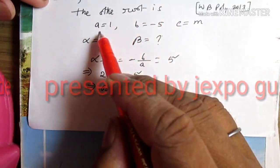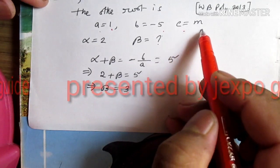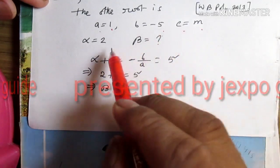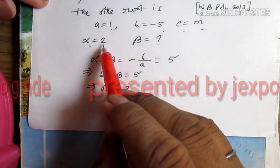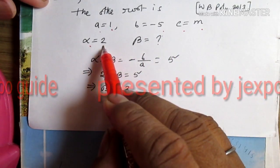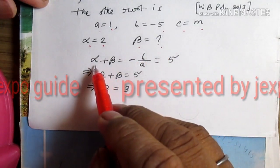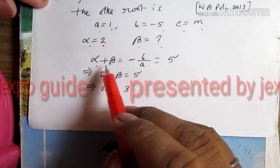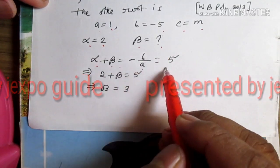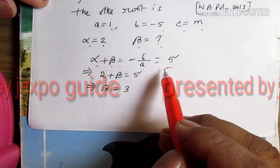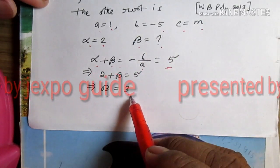Here a is equal to 1, b is equal to minus 5, and c is equal to m. Alpha is equal to 2. Using alpha plus beta equals minus b by a, we get 2 plus beta equals 5, so beta is equal to 3.